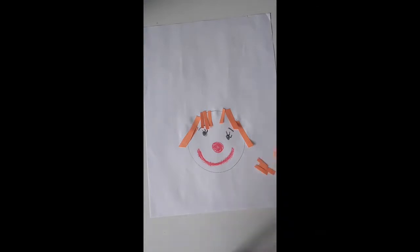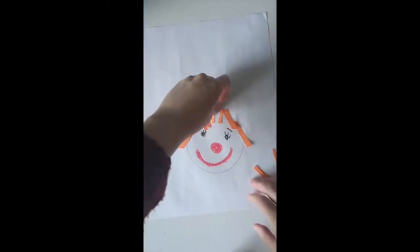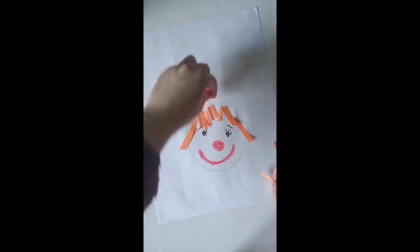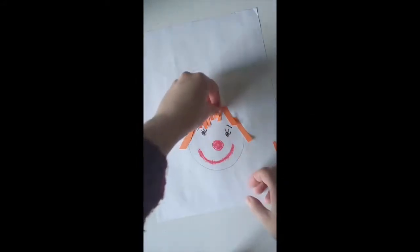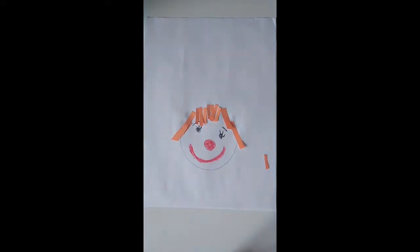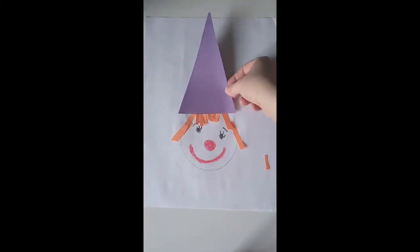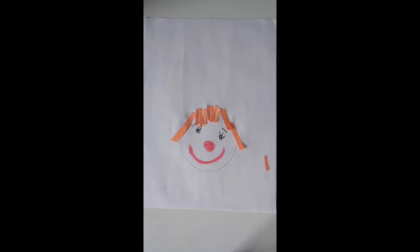So, just a few more hairs, and then I think he needs a hat. Not all clowns have hats, but I think a lot of them do. So, here's his funny red hair, and I'm going to make a hat just by cutting out a triangle from my construction paper, and I'm going to put it on top. So, I'm also going to put some glue on my hat.